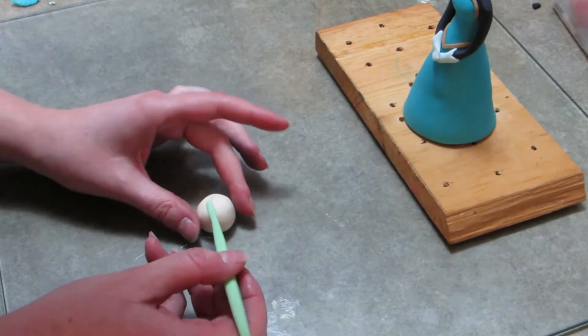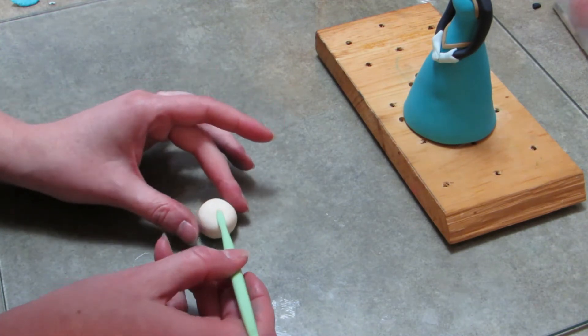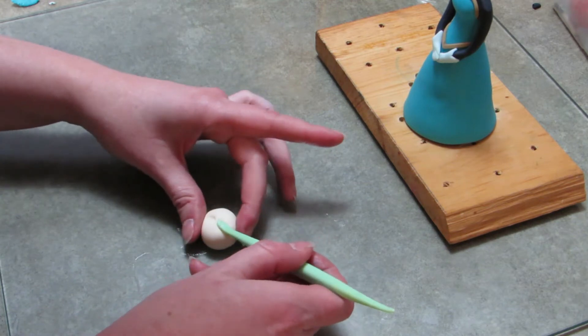Take a small round ball and about halfway down press indents for the eyes. Make sure they're deep enough that you're really going to be able to sink the eyes in because you don't want her looking buggy-eyed later on.